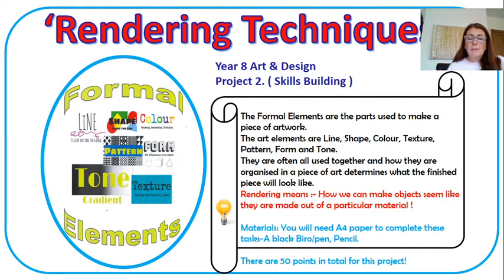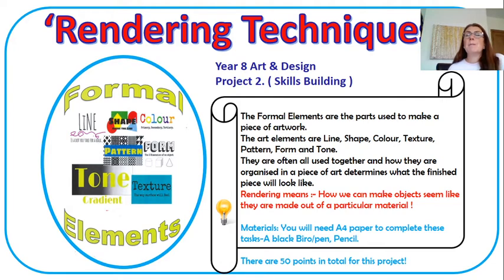If we just have a look where the light bulb is at the bottom of this page, it said rendering means how we can make objects seem like they are made out of a particular type of material. So the materials that you're going to need are A4 paper and perhaps a biro or a pen or a pencil. And there are going to be 50 marks that are available for this particular piece of work.